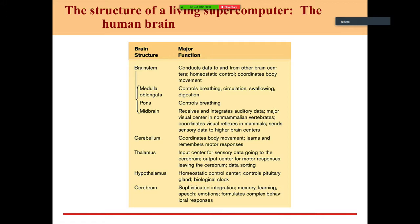The cerebellum coordinates body movement, learns and remembers motor responses, and serves as an input center for sensory data and output center for motor responses. The hypothalamus is a critical homeostatic control center that monitors internal environment conditions such as blood pressure and blood osmolarity. It then adjusts the body using the pituitary gland — referred to as the master endocrine gland — as well as neural controls.